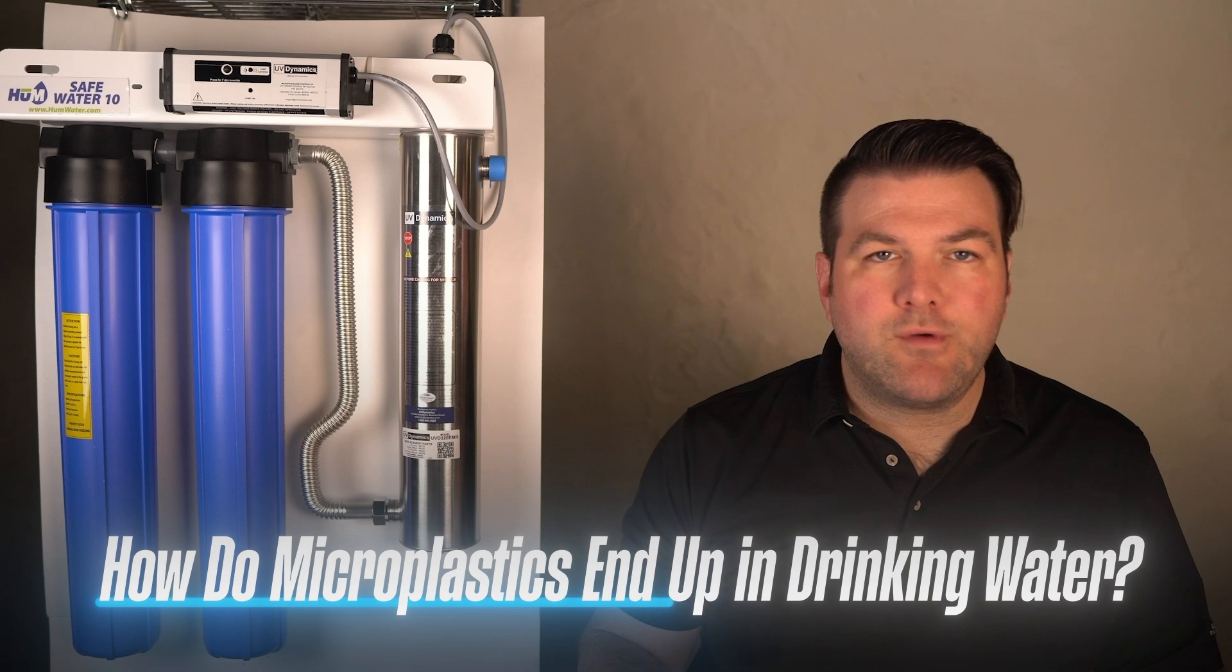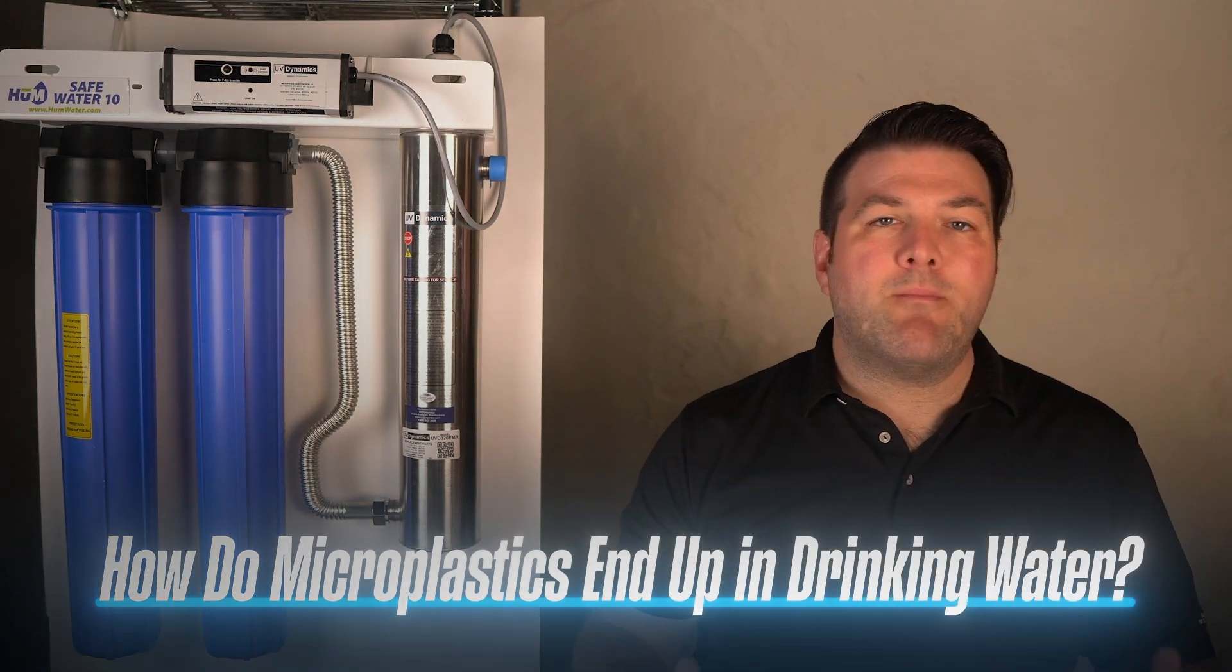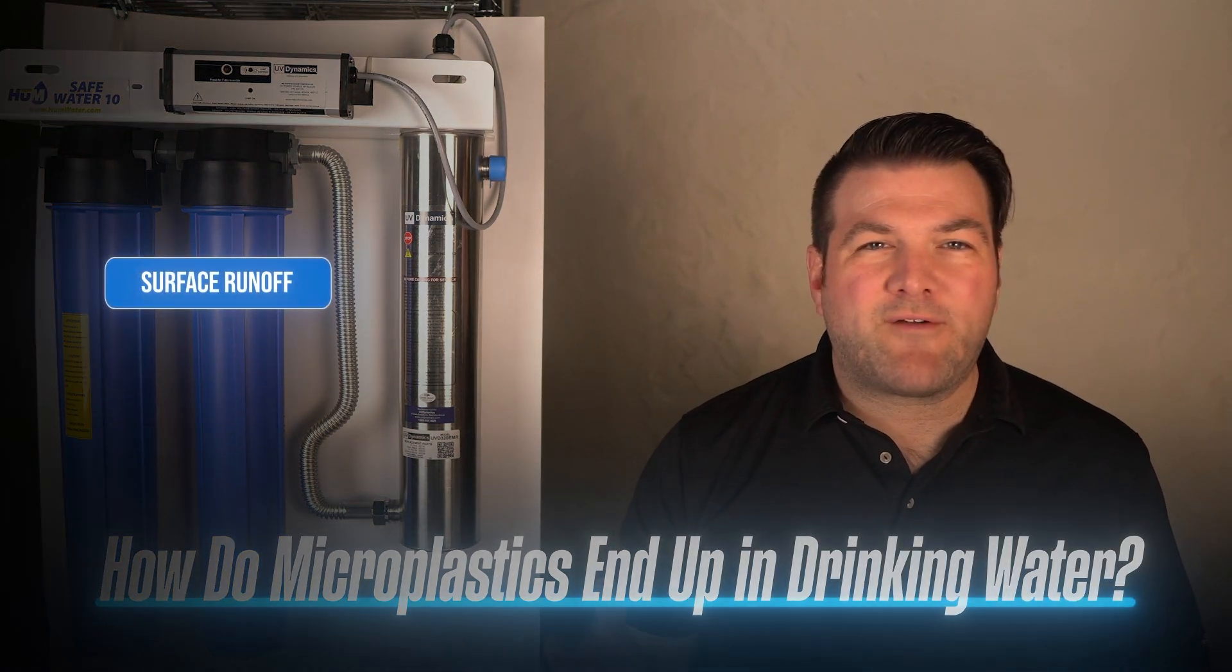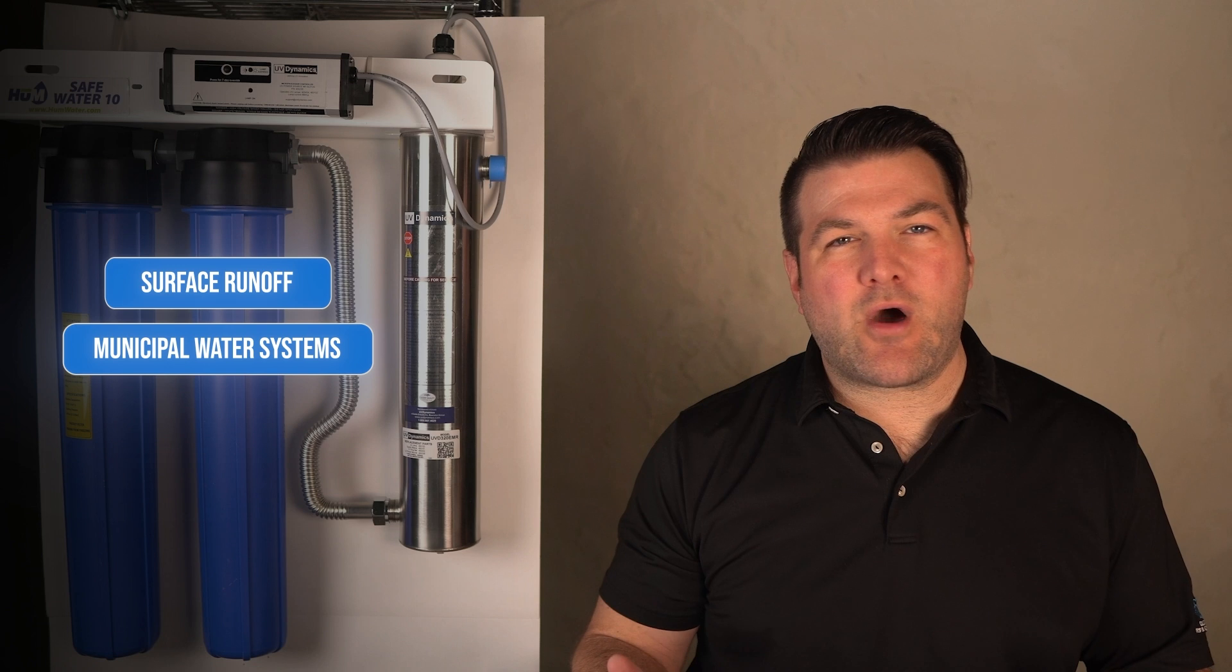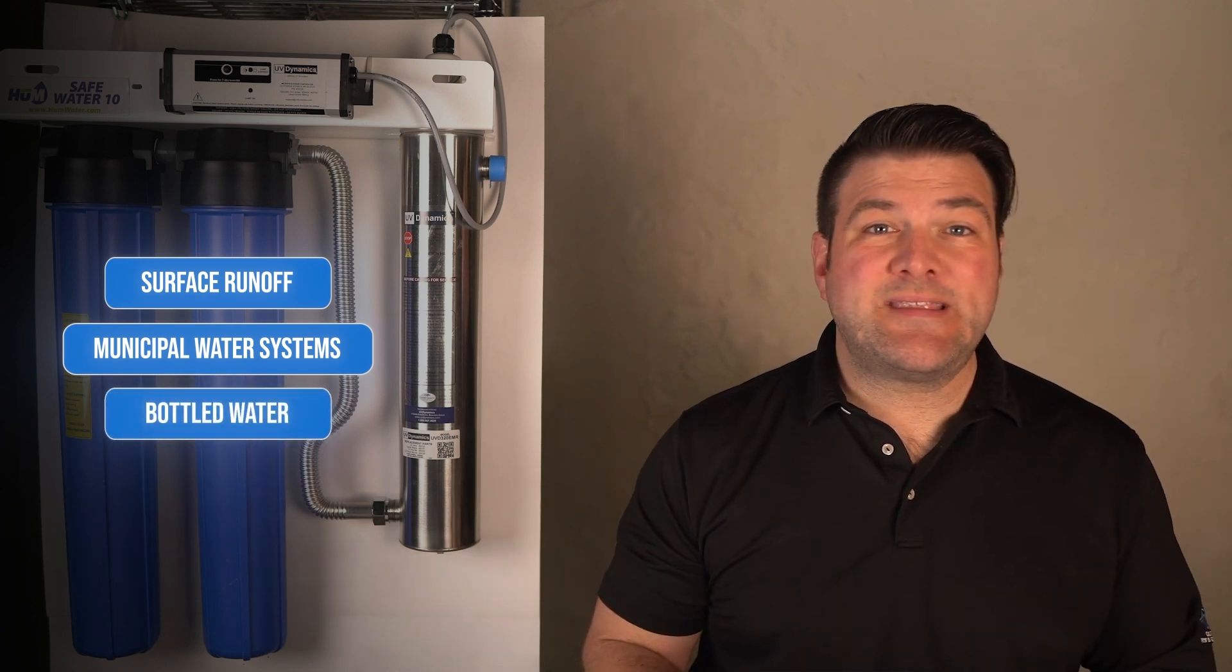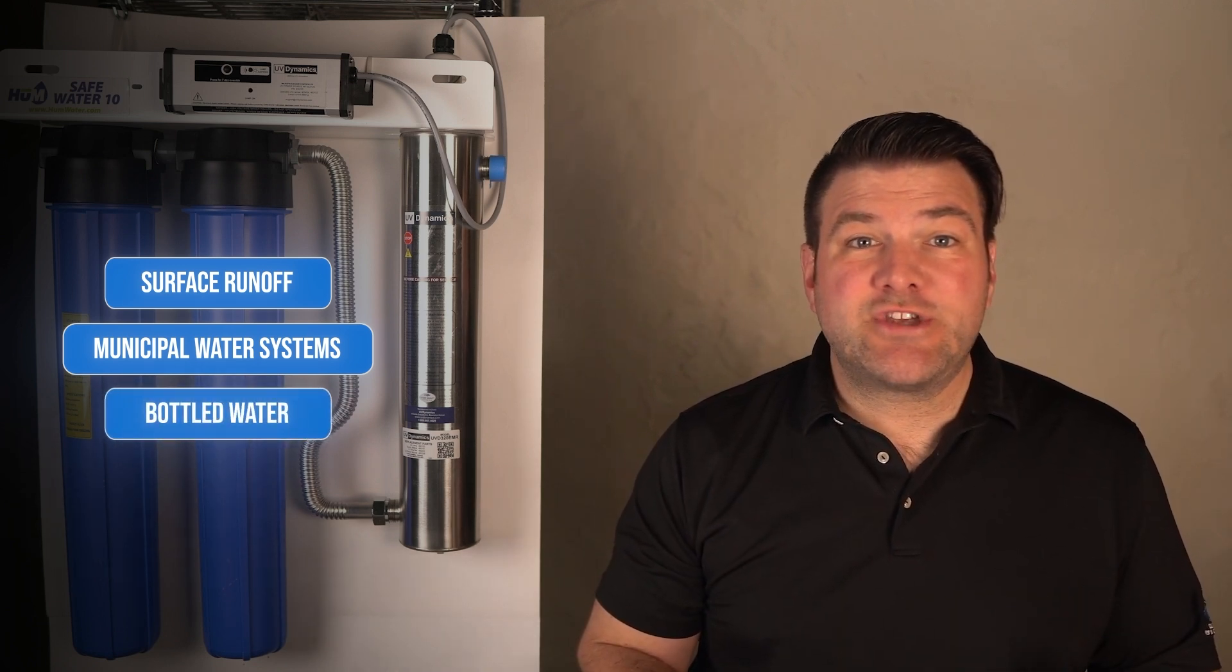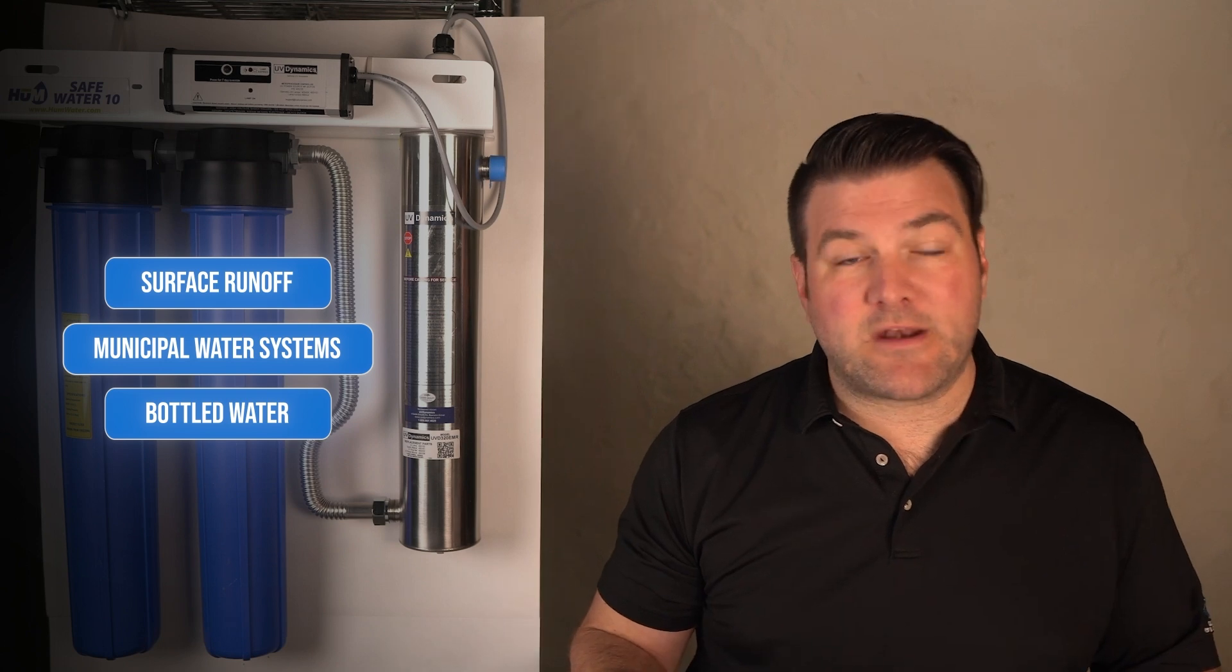How do they end up in our drinking water? Most people assume their water's clean, but microplastics make their way into our drinking water multiple ways, like surface runoff from rain washing plastic debris into lakes and rivers, municipal water systems that can't always filter it out, and bottled water, which isn't necessarily safer. Some studies show it contains even more microplastics than tap water.